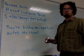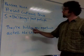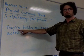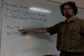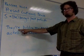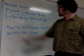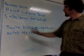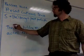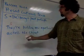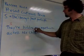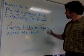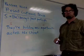A useful exercise is to take a sentence that's in the present continuous tense, active voice, and change it into the passive voice. In this sentence — they're building new apartments across the street — the subject is 'they,' the verb is 'are building,' and the object is 'new apartments across the street.'